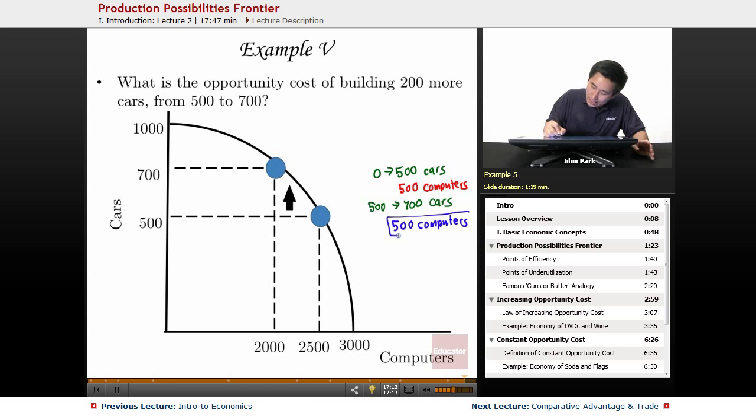Now it's still an increasing opportunity cost because you're only building 200 more cars, yet you're giving up the same amount of computers - 500 here and 500 here. Here you had 500 cars, but now you only have 200 cars, and yet you still gave up those 500 computers.